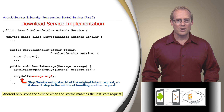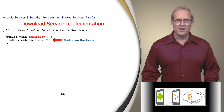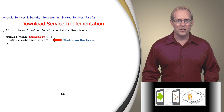Eventually, the start ID will match the last start request and the download service will be stopped, at which point the Android service framework will invoke its onDestroy hook method, which quits the looper and shuts down the handler thread.